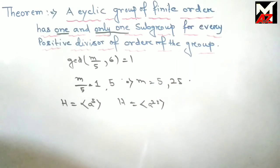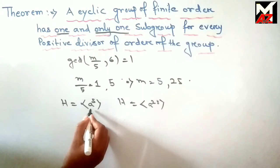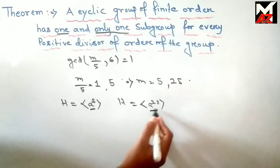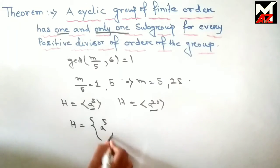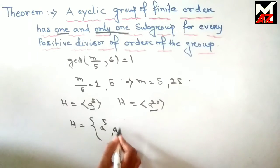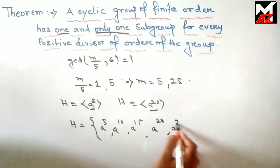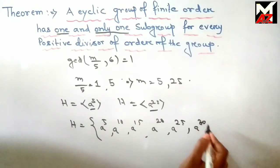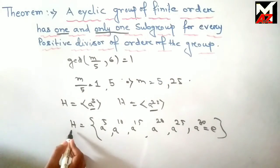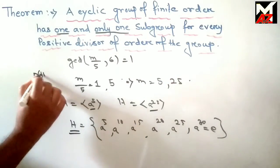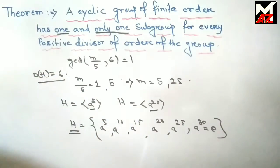So the order of the subgroup is 6, and the generators are A^5 and A^25. The subgroup H consists of elements: A^5, A^10, A^15, A^20, A^25, and A^30 = E — that is 6 elements, confirming order of H is 6. So this is the subgroup and these two are the generators.